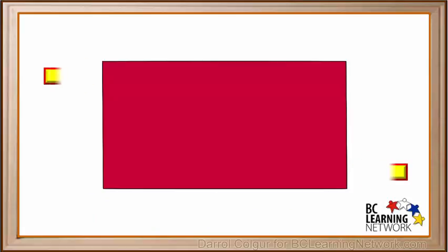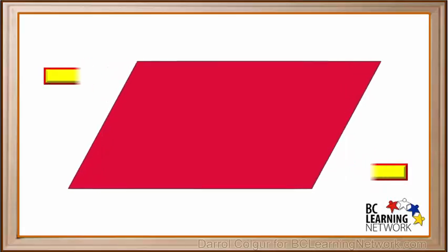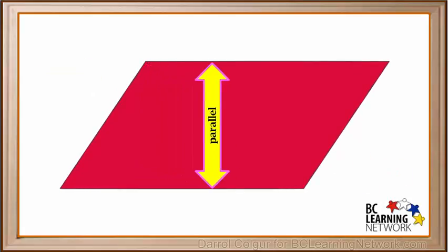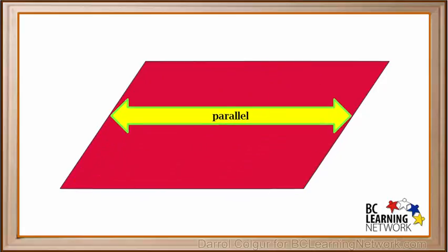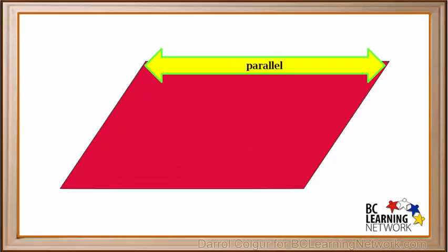Now we'll push this rectangle from the top left and the bottom right, and we'll turn it into a parallelogram. The top and the bottom are parallel to each other, and the left side and right side are also parallel to each other. So this is a parallelogram.